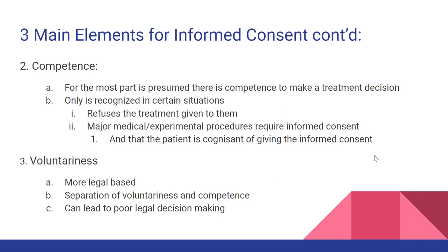Voluntariness is the third and last element for informed consent. This is more legal-based — it is a separation of voluntariness and competence. Unfortunately, this can lead to poor legal decision-making by the patient as well.